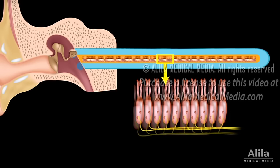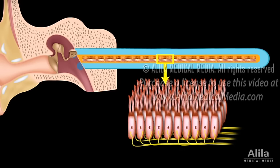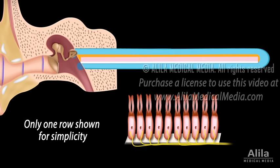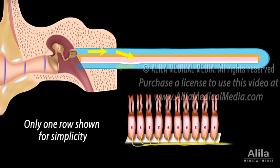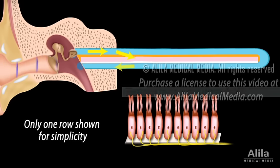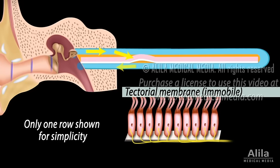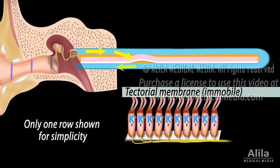There are four rows of hair cells within the cochlear duct, supported on the basilar membrane. The movements back and forth of the stapes push on the fluid in the cochlear duct, causing the basilar membrane and the hair cells to move up and down. These movements bend the cilia of hair cells, opening the mechanically gated potassium channels on their surface. Influx of potassium depolarizes the cells, stimulating them to send nerve impulses to the cochlear nerve and onto the brain.